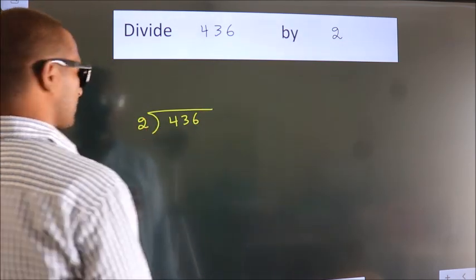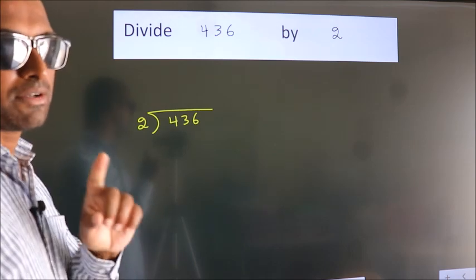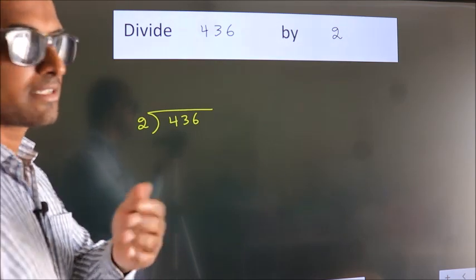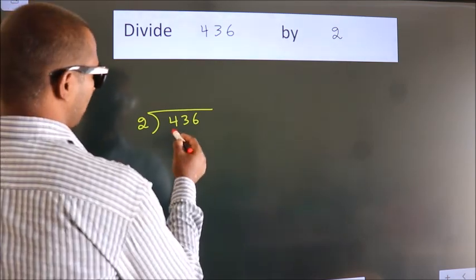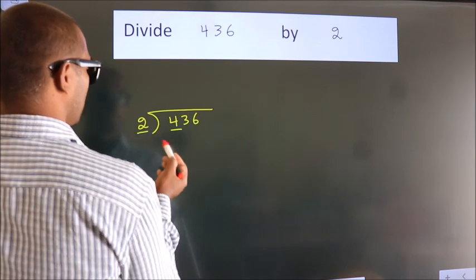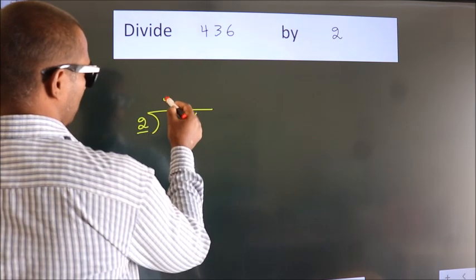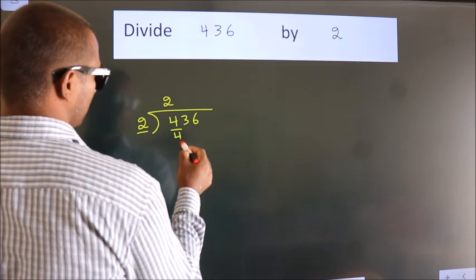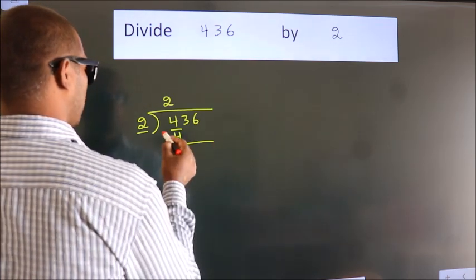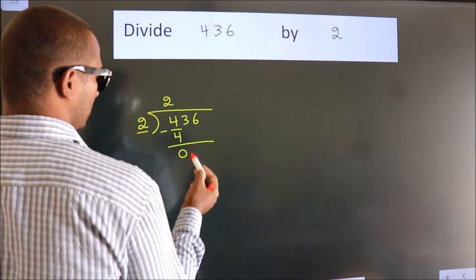This is your step 1. Next, here we have 4, here 2. When do we get 4? In 2 table, 2 2s, 4. Now we should subtract, we get 0.